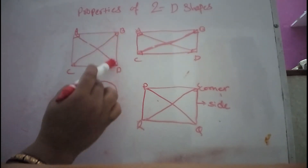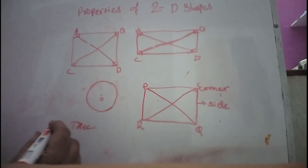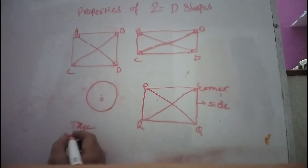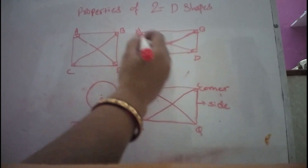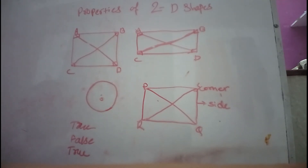On page 47 there are questions — observe the shapes and answer true or false. All sides of a square are equal: true. All sides of a rectangle are equal: false. All sides of a square and rectangle are straight: true.